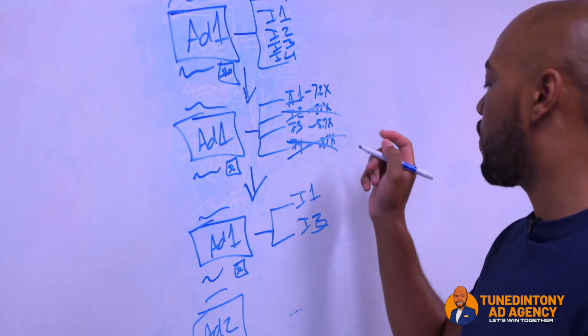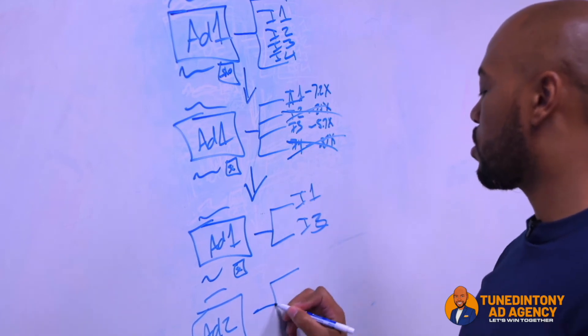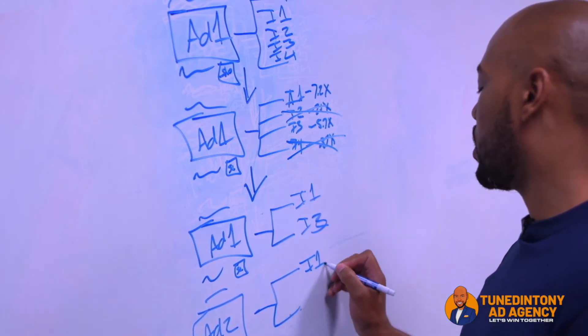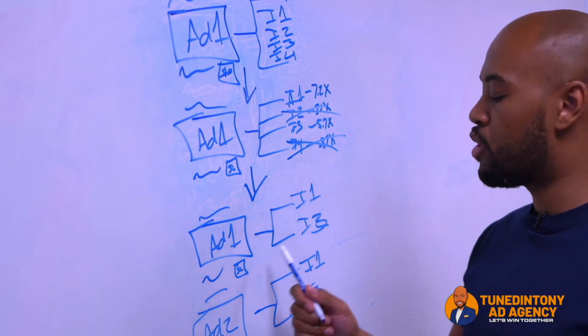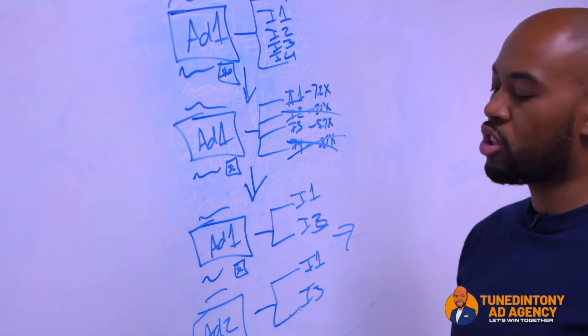I'm also going to test ad two with interest one and interest three. Now what this test is going to give us by going horizontal is it's going to show us what is the best creative and what is the best interest, giving us a winning ad.